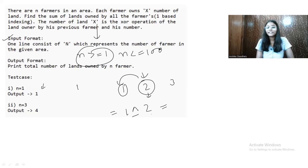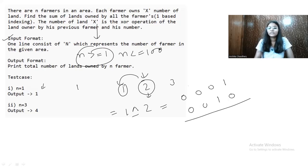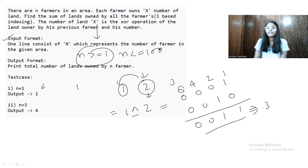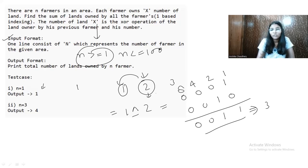XOR is a bitwise operator, so we convert integers to binary. 1 in binary is 0001, and 2 in binary is 0010. Using the 8-4-2-1 positional method: where bits differ XOR returns 1, where both are 0 XOR returns 0. The result is 0011, which is 3. So farmer 2 owns 3 units of land. Our vector now contains 1 and 3.